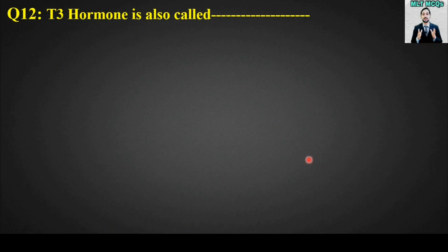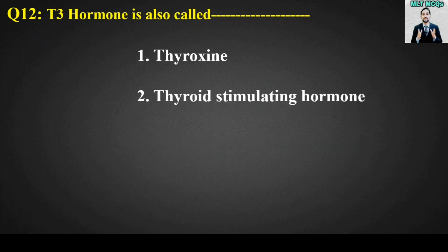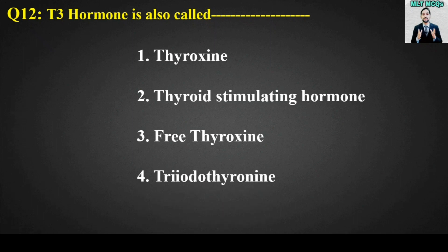MCQ number 12: T3 hormone is also called blank. Options are: thyroxine, thyroid stimulating hormone, free thyroxine, or triiodothyronine. The right answer is option number 4. T3 hormone is also called triiodothyronine.